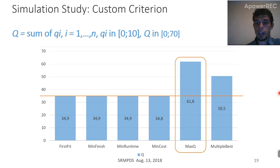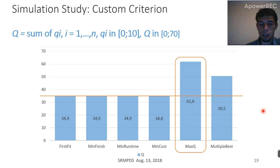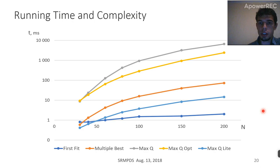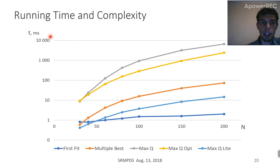On this graph and the previous one, we showed MaxQ and not MaxQopt because they are essentially the same algorithm — they provide absolutely the same results, and the difference between them is only in their implementations and complexity. MaxQopt has some heuristics to decrease the complexity. This graph shows the actual algorithm running time depending on the number of nodes in our environment, with a logarithmic scale on time in milliseconds.